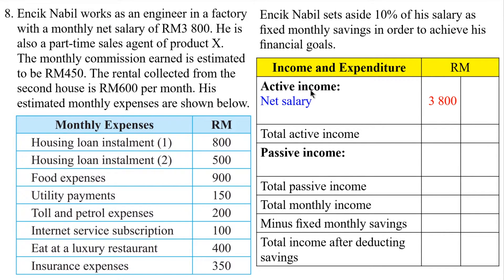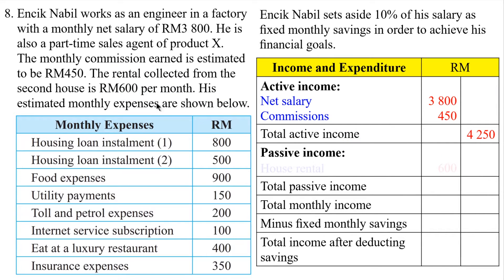The net salary is active income and the amount is written on the left side. The commission earned is RM450, which is also active income, and its amount is written on the left side as well. The total active income is the summation of these two amounts, written on the right side as RM4,250. There is only one passive income — rental of RM600 — written on the left side, so the total passive income is RM600. The total monthly income is the summation of these two amounts, which is RM4,850.